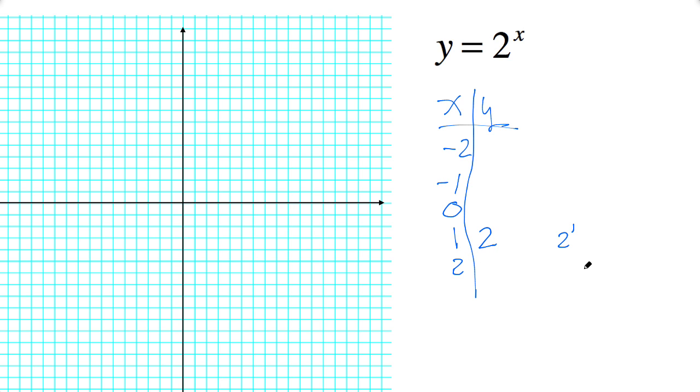How about 2 to the 2? 2 squared. When x is 2, y is 4. This should make perfect sense.